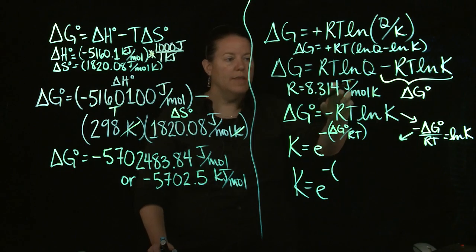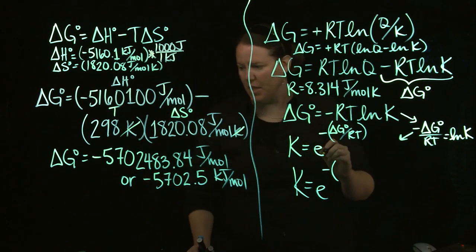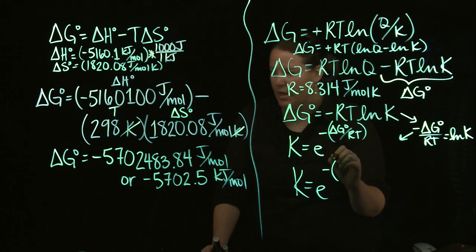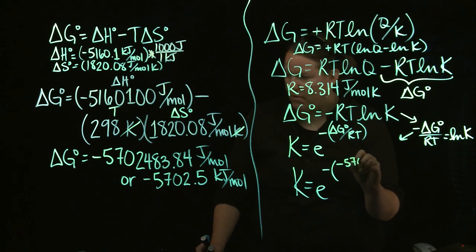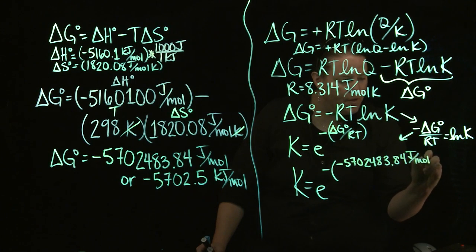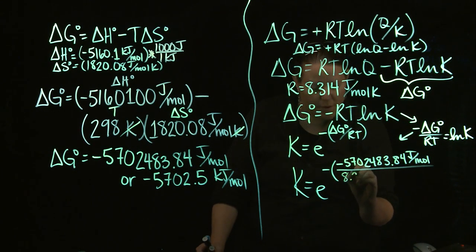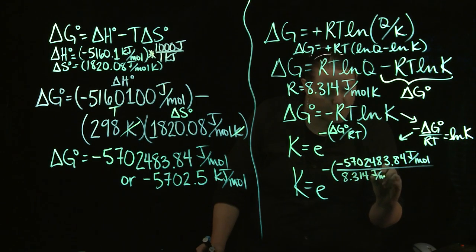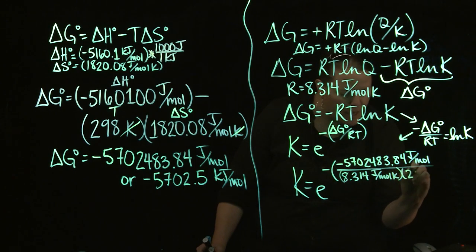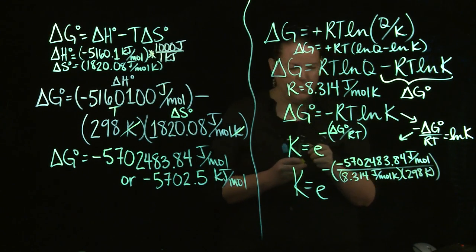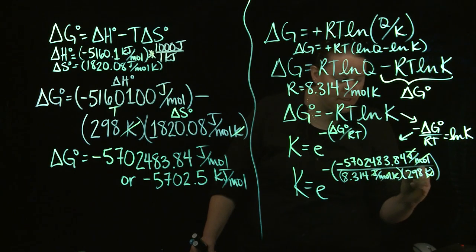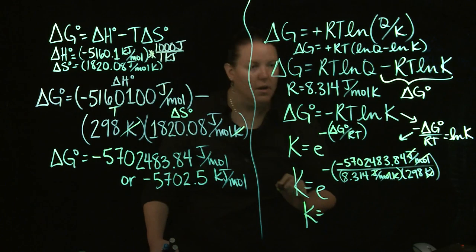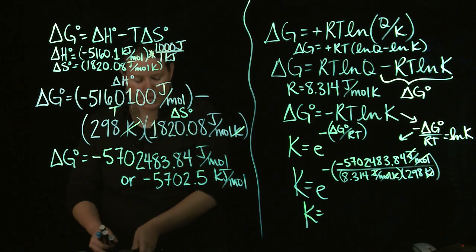Since that's true, and this has joules in it, I need to use joules, the joules value, which is this ridiculously long number. So negative, and then since the equation has a negative and my G has a negative, I have to do a negative in here too. Negative 5702483.84 joules per mole divided by 8.314 joules per mole K. And again, we're still assuming that it's 298 K. Notice that in this case, when you do this, everything cancels out, which is exactly how it should be. K is unitless, remember? So now I plug this in.